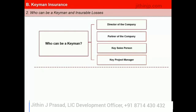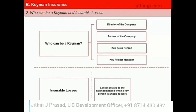Finally, let us understand what kind of losses are insured in Keyman Insurance. First are losses related to the extended period when a key person is unable to work — to provide temporary personnel and, if necessary, to finance the recruitment and training of a replacement. Second is insurance to protect profits, for example, offsetting lost income from lost sales, losses resulting from the delay or cancellation of any business project that the key person was involved in, loss of opportunity to expand, and loss of specialized skills or knowledge.